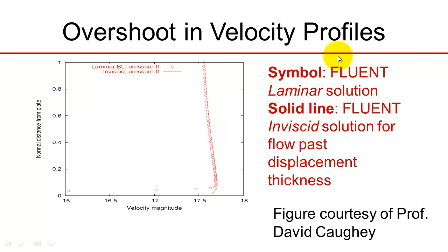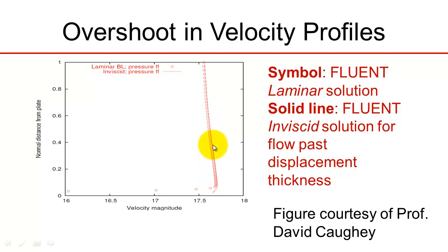What he did was run the Fluent laminar solution for a flat plate — shown by the symbols — which gives that overshoot in the velocity profile. Then he ran a second solution: the inviscid solution for the outer flow past the displacement thickness, not the flat plate. That's shown by the solid line, and you can see it nicely matches the Fluent solution outside the boundary layer.